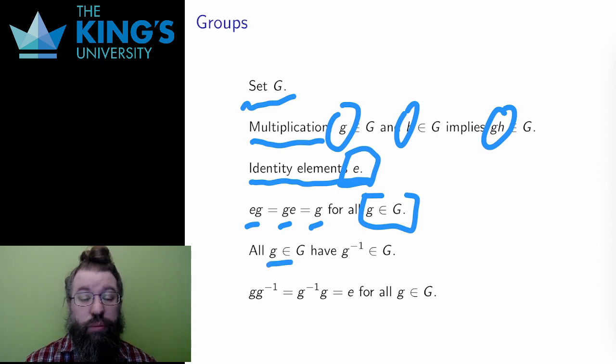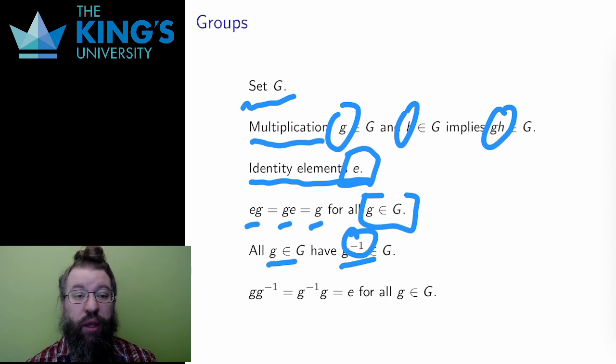Also, all things in the group have a matching element, g inverse, called the inverse. The negative one here is just notation. This may not be any kind of reciprocal or function inverse. It's just another group element. But if you multiply by the inverse, you get the identity. That's what an inverse is.